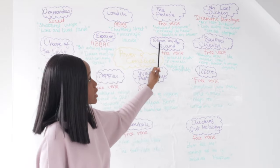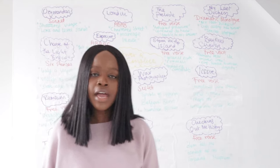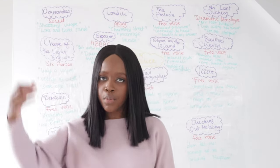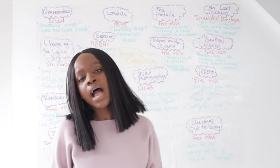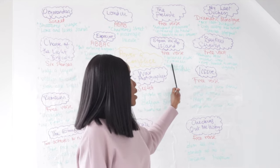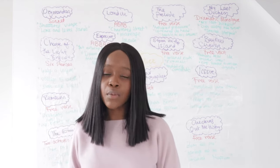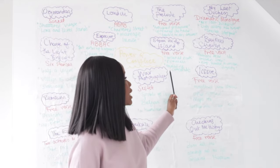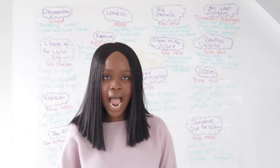The next poem is Storm on the Island, written in free verse. The first quotation is 'wizened earth,' describing the people preparing for the storm digging into earth that has been there a long time and will outlast them. This contrasts with how the sea pummels them, showing we can't underestimate the power of nature. The final quotation is 'exploding comfortably,' an oxymoron describing a sea that seems unthreatening but has the innate power to destroy the entire island.